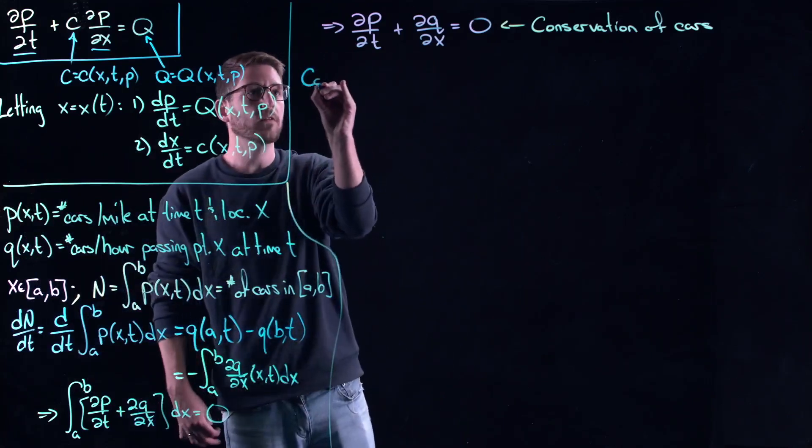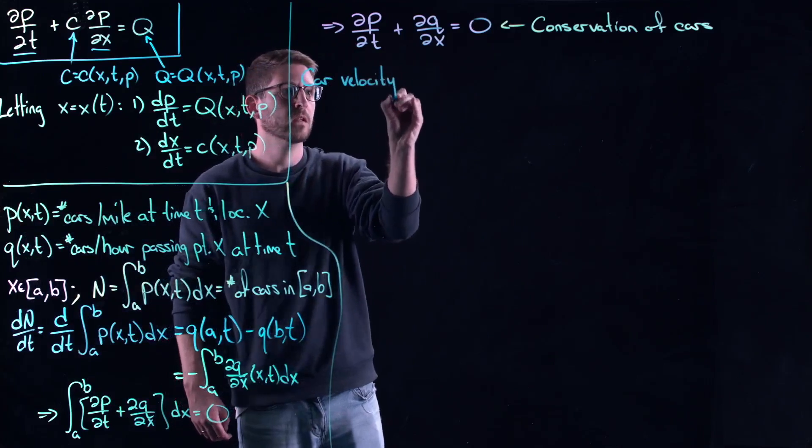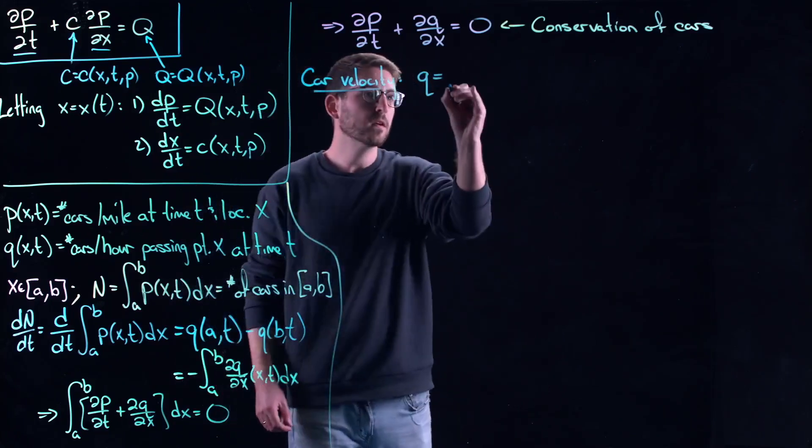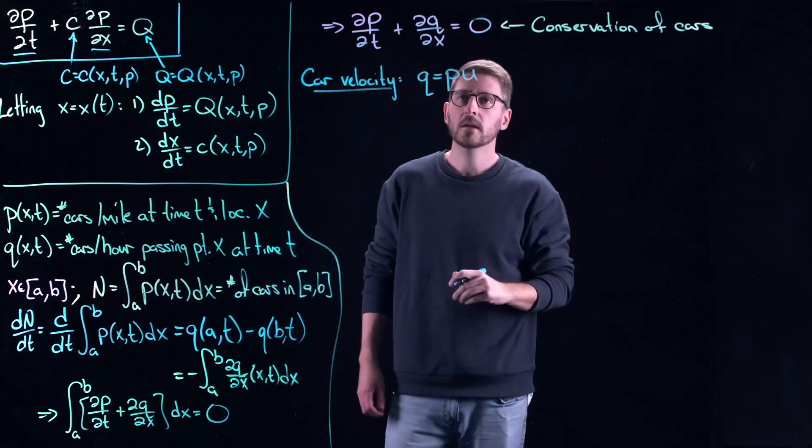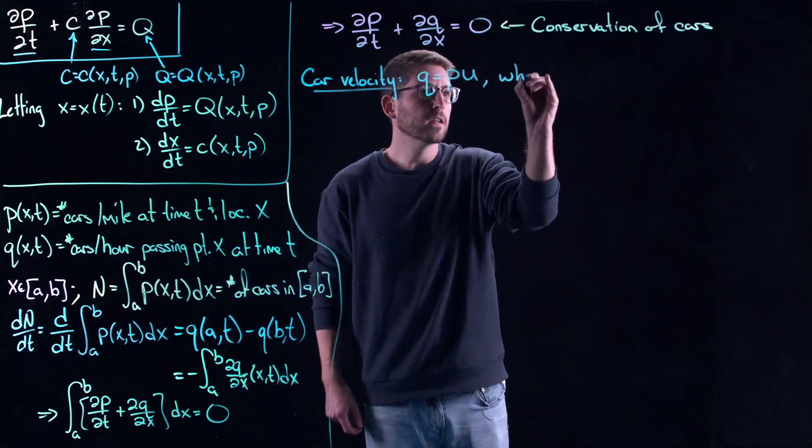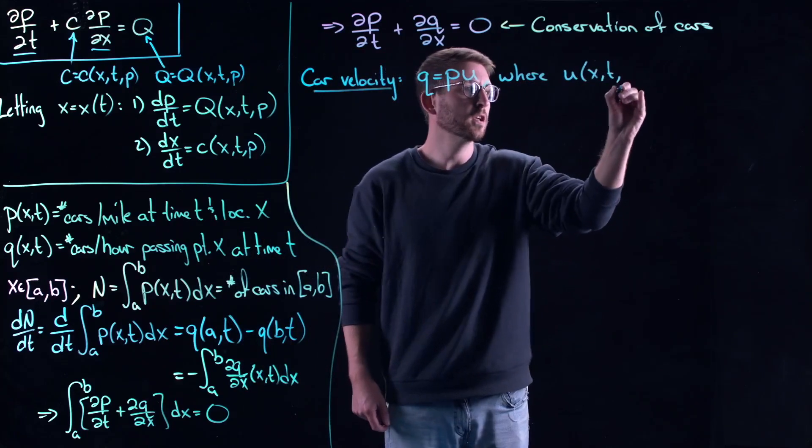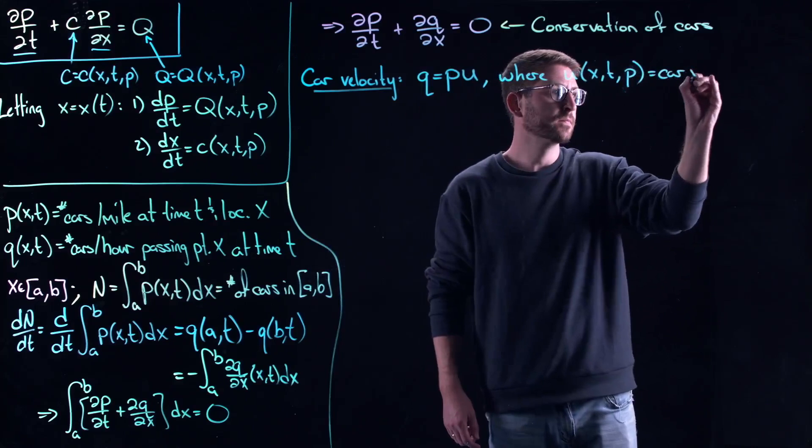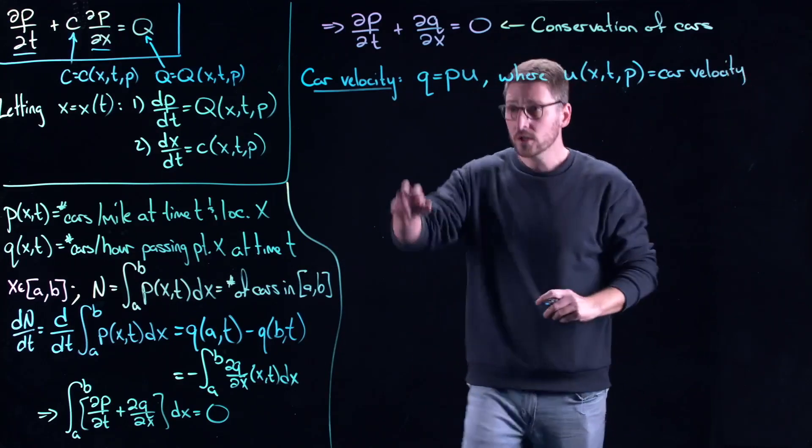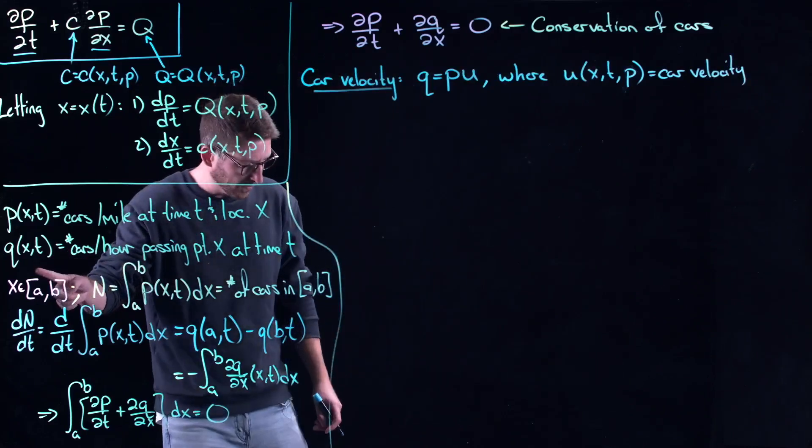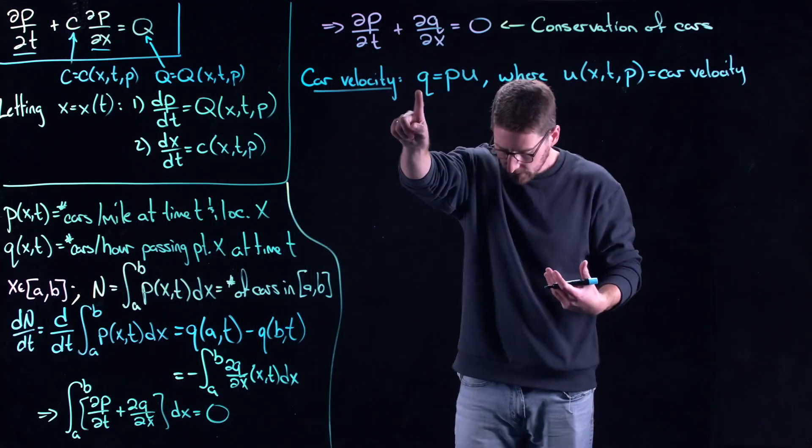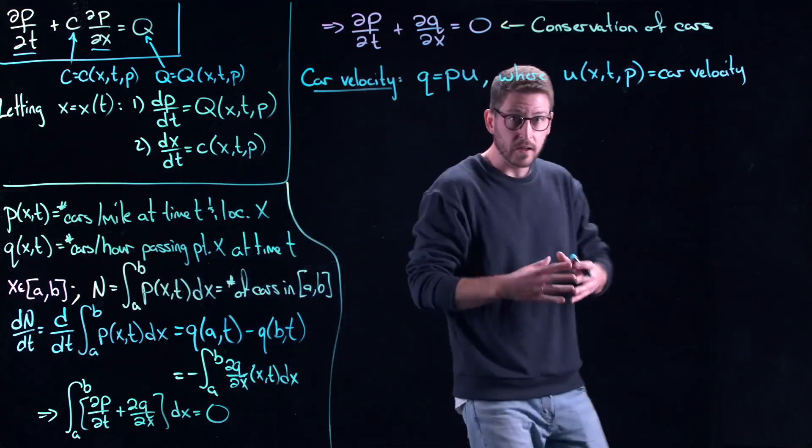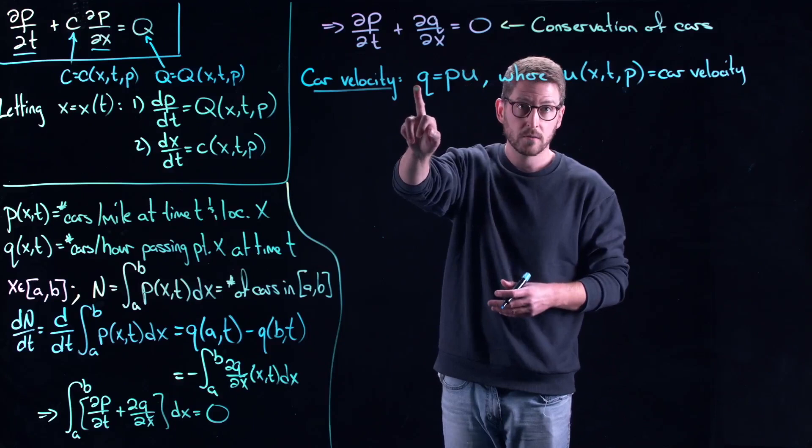The next thing we need to look at is the car velocity. The car velocity in this case, I'm going to write this, q is equal to p times u, where u is a function of potentially p, which is equal to the car velocity. Essentially what this says is the number of cars per hour passing a point x at point t in space is essentially the density of the cars times the velocity that they are moving at. That should make sense to you. Lots of cars, they're moving quickly, then you have lots of cars per hour moving past you.